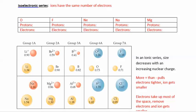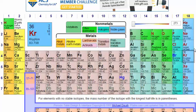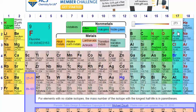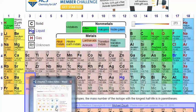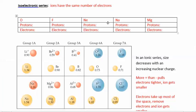So if we look on the periodic table, you can find neon over here. Neon is element number 10, which means it has 10 protons and 10 electrons. Fluorine has 9 protons and 9 electrons. So let's look at how they are related.